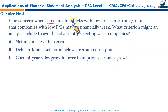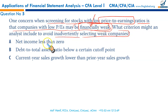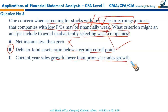One concern when screening for stocks with low price-to-earnings ratios is that companies with low P/E may be financially weak. To avoid inadvertently selecting a financially weak company, an analyst might include criteria such as: net income less than zero — no, that selects loss-making firms. A low debt-to-total-assets ratio below a certain cutoff is desirable to select a financially viable and stable company. B is the right answer.